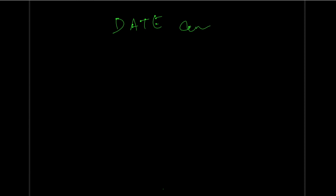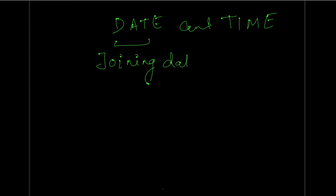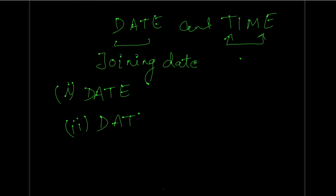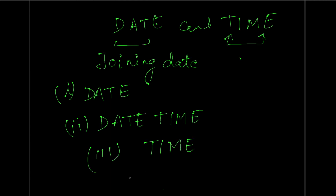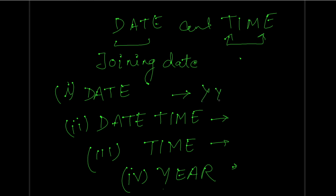Now let's discuss date and time data types. Sometimes when creating a table you need to store dates — for example, an employee's joining date — or times. In MySQL, we have four date and time types: DATE for storing only a date, DATETIME for storing both date and time, TIME for storing only time, and YEAR for storing a year. The DATE format is YYYY-MM-DD, for example 2022-05-01.